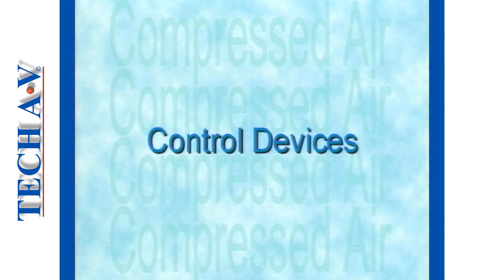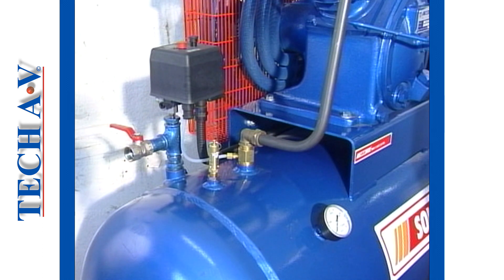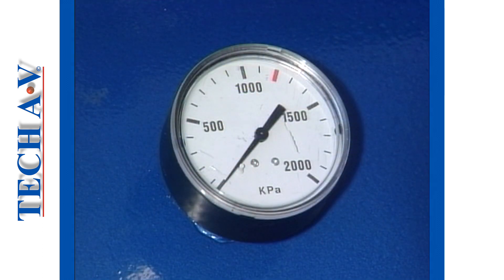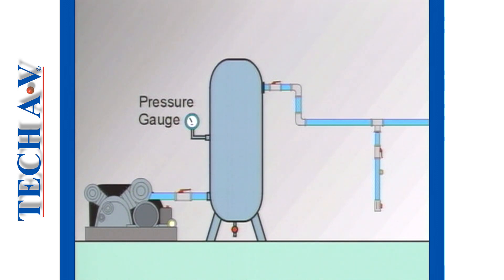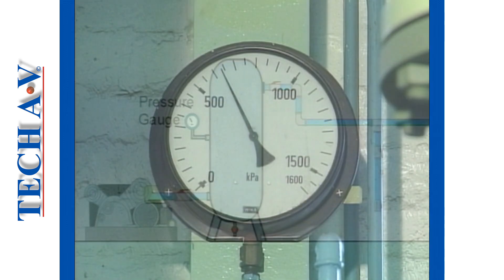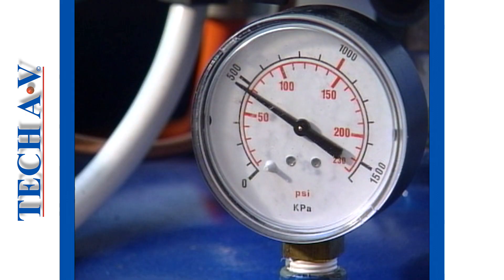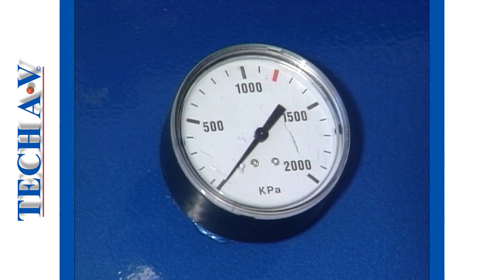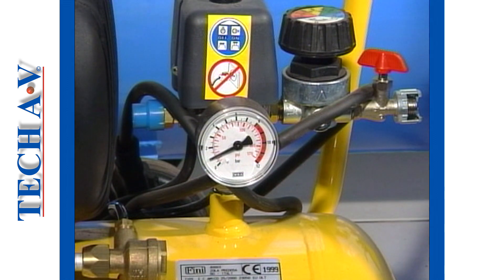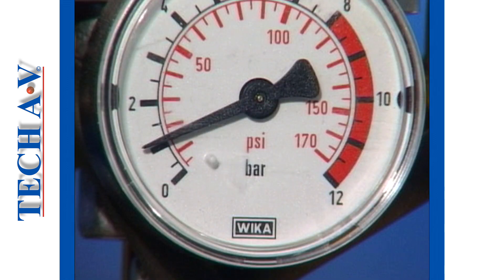Let us now look at some important control devices that will feature in virtually all compressed air systems. One device that is very necessary is a pressure gauge. A pressure gauge lets us know what pressure is being held within the system. A pressure gauge can be situated anywhere in the system, but most commonly it is located at or close to the receiver. Gauges may read in bars or kilopascals. Some gauges may also provide readings in the American system, which uses pounds per square inch, or PSI.